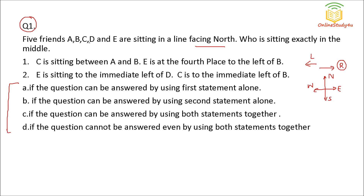A, B, C, D and E are sitting in a line facing north — who is sitting exactly in the middle? Statement one: C is sitting between A and B. So in one possibility A will sit here and B will sit here; in another possibility B is here and A is here, because C is sitting between B and A.